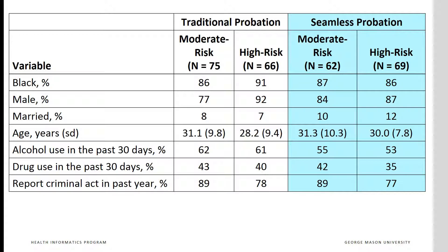At baseline, none of the differences were statistically significant. Therefore, random assignment to seamless and traditional probation seemed to have worked effectively in protecting against baseline differences. Although within these two groups, moderate and high-risk groups had significant differences, those were within the group, and we are only interested in the comparison of traditional with seamless probation.